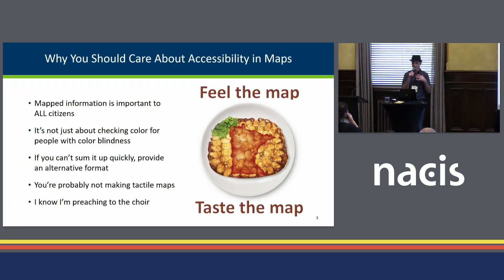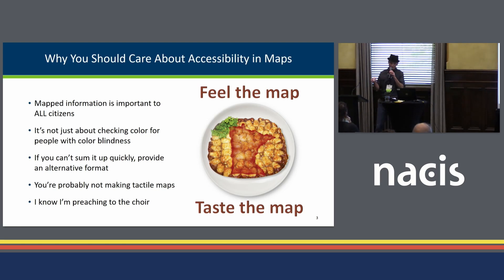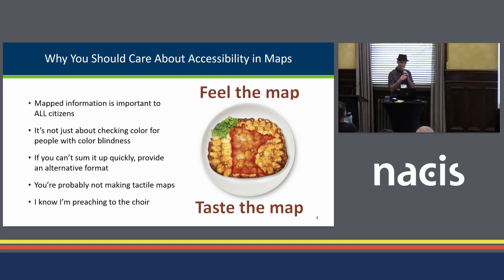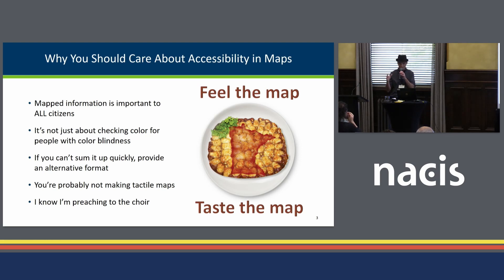Why should you care? A mentor of mine always said, start with why. If you work for the government like me, or even a non-profit, or even private sector, the information you put on a map is important to every citizen. And they might not be able to physically consume that with their eyeballs — they might be blind or low vision. So it's not just about checking for color blindness. It's presenting that information in an alternative format, and hopefully summing it up quickly with an alt tag of the map itself — at least saying this is a map, so someone who's completely blind knows to skip it.